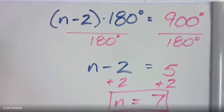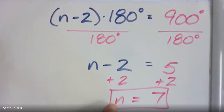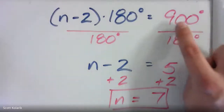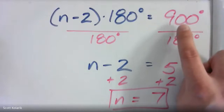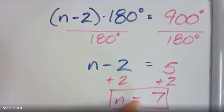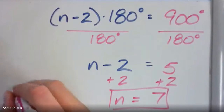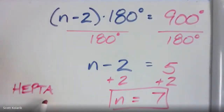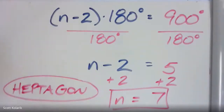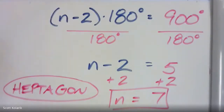Since n = 7, the shape has seven sides. Referring back to the chart, a seven-sided polygon is called a heptagon — 'hepta' means seven in Greek, 'gon' means sides. Be prepared: the problem may ask you to give the name or just solve for n — either way it's the same formula and same process. That's about as tricky as this type of problem gets.